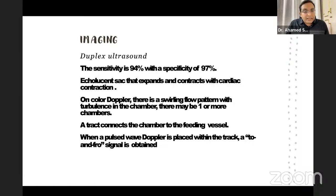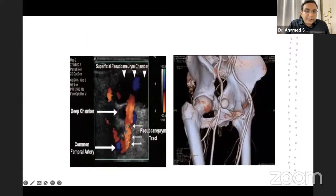Ultrasound is both sensitive and specific. A sac that expands and contracts with cardiac contraction will be seen. Color Doppler will show a swirling pattern with turbulence in the chambers. There may be one or more chambers in the pseudoaneurysm sac, and a tract connecting the chamber to the feeding vessel. On the Doppler image, we can see the superficial and deep chambers and the pseudoaneurysm tract connecting to the common femoral artery.